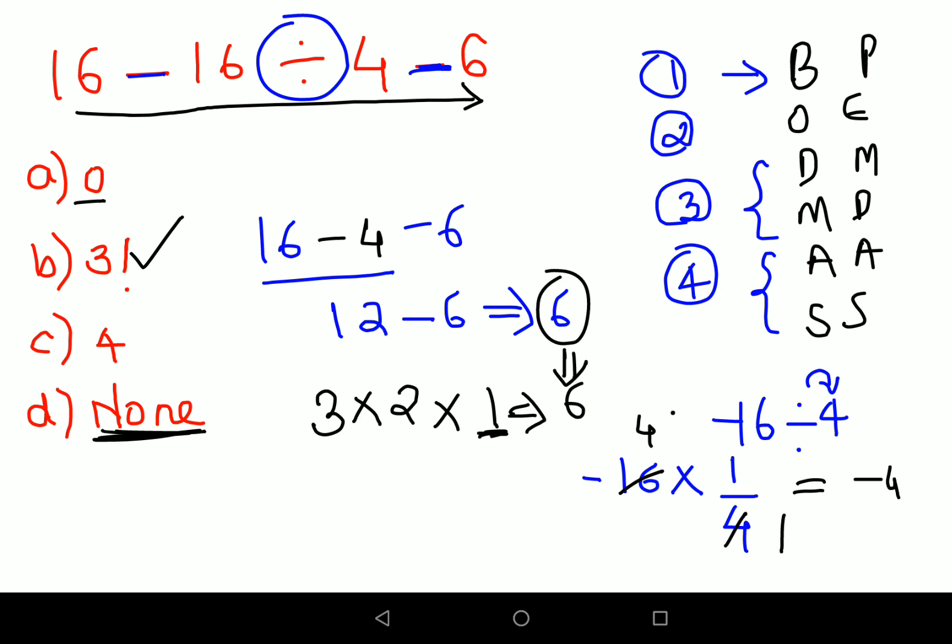So your answer is 3 factorial. There are times when in tests they give options in such a way, especially when there's a none option, people tend to mark none. There are people who would have gotten 6 but did not realize that 3 factorial is 6.